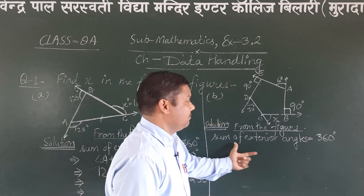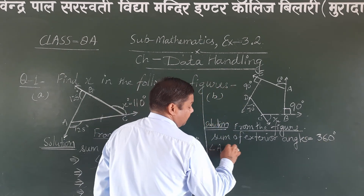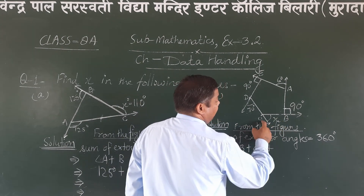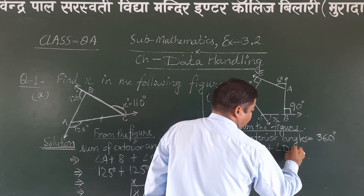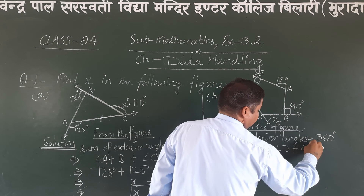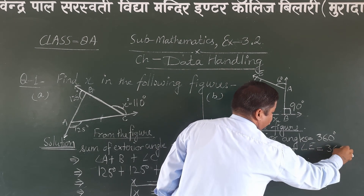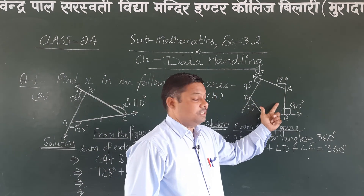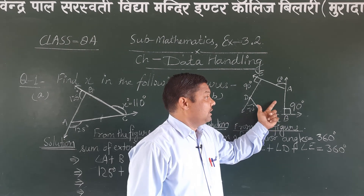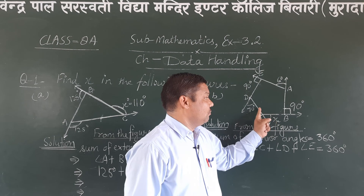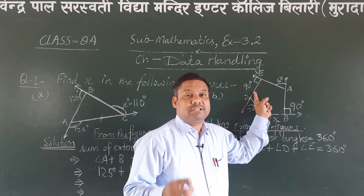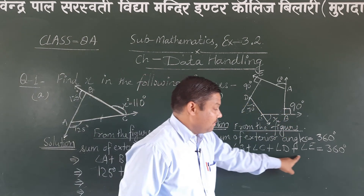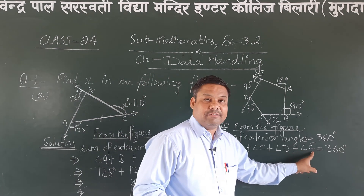So we write: angle A plus angle B plus angle C plus angle D plus angle E. This polygon is made up of 1, 2, 3, 4, 5 sides — so this is a pentagon. Our polygon has 5 angles, and all exterior angles must sum to 360 degrees.